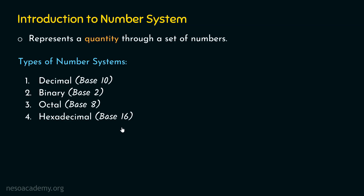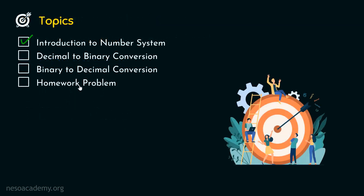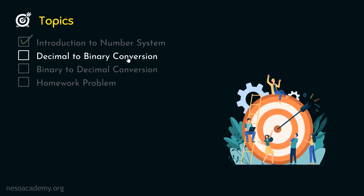After seeing different types of number systems, we are now ready to understand how to convert decimal to binary and binary to decimal numbers. First, we will understand how to convert a decimal number to a binary number. That is decimal to binary conversion. We are done with introduction to number system, and now let's see how to convert a decimal number to a binary number.